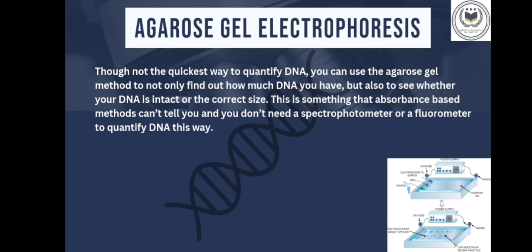This is something that absorbance-based methods can't tell you, and you don't need a spectrophotometer or fluorometer to quantify DNA this way. Agarose gel electrophoresis is commonly used to separate DNA fragments following restriction endonuclease digestion or PCR amplification, and fragments are detected by staining the gel with an intercalating dye, followed by visualization under ultraviolet light.